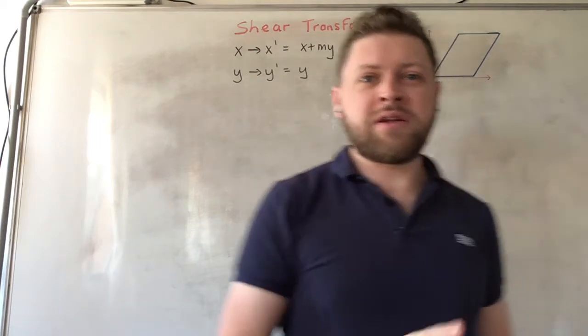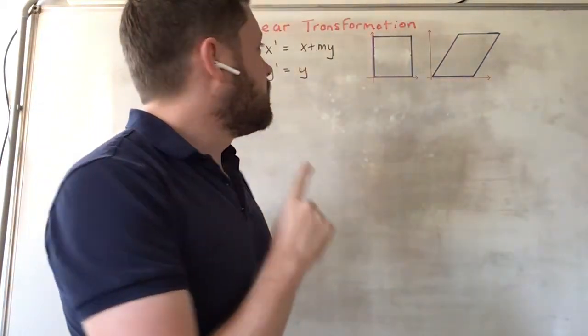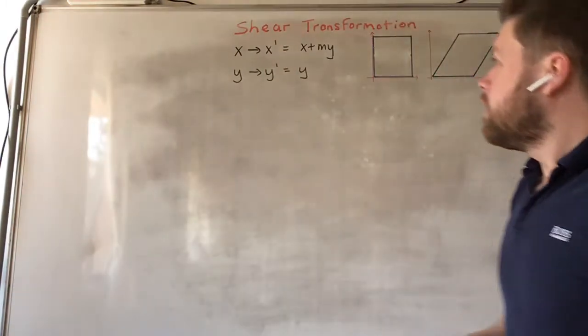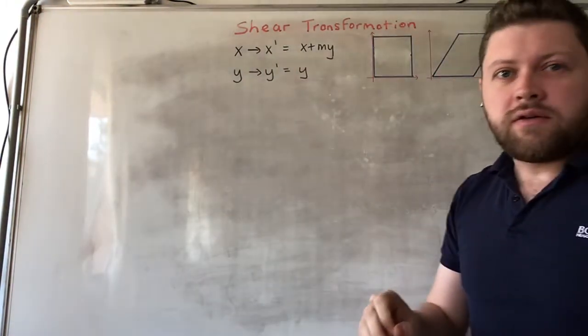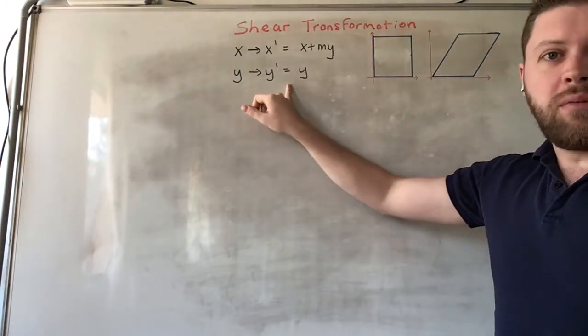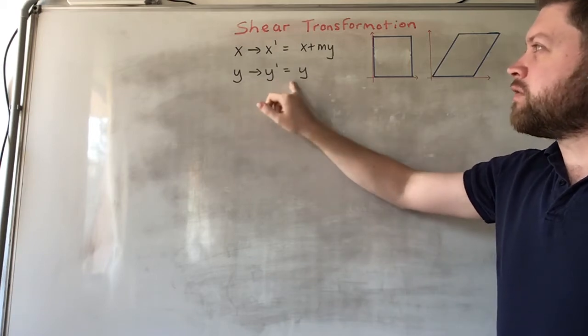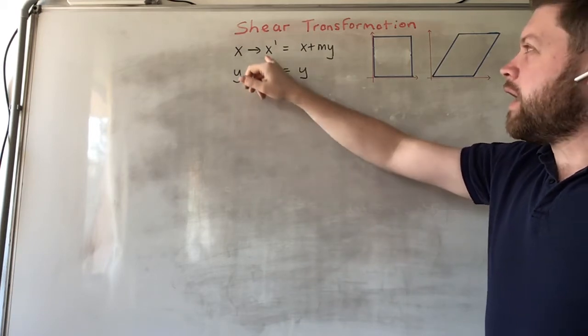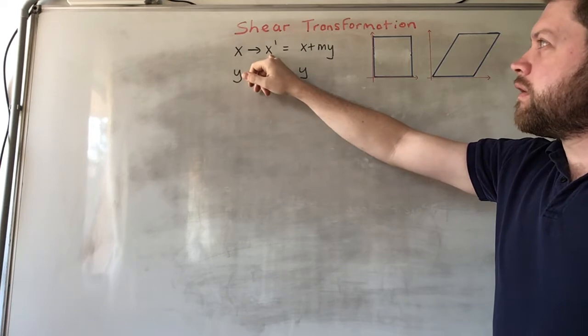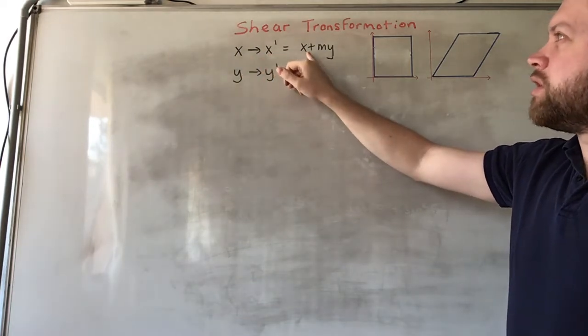We're going to talk briefly about a sheer transformation. This involves a transformation of this form where y remains unchanged, but x, the new x coordinate, moves in proportion to the original y coordinate.